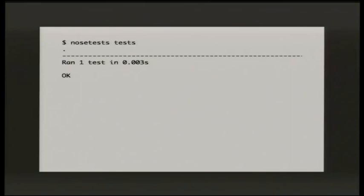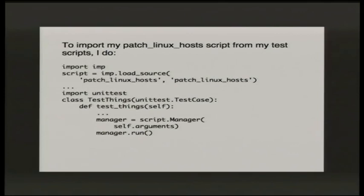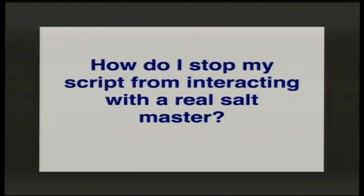Nose tests explores the test directory, finds all my test files, opens them, finds all the test classes, and runs all the test methods. Now — how do we test my script? This is an extract of what my script looks like: there's a main method, a run method, an object I'm instantiating, and the test.ping to discover what minions are alive. If I'm testing that, I don't want it to actually talk to Salt. The way I test my script — it's not a module — is to use the imp module to load that script into an object.